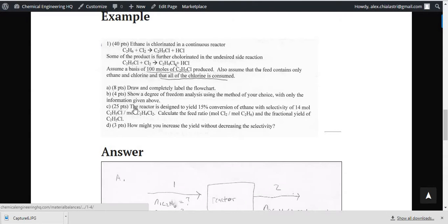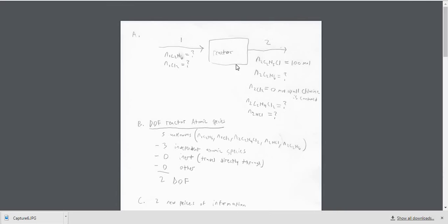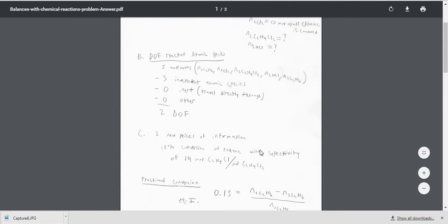But going back to the problem that we showed, in Part C we're given two more pieces of information. We're given that the yield is 15% of the conversion of ethane, and that there's a selectivity of 14 moles of C2H5Cl per mole of C2H4Cl2. And we're asked to calculate the feed ratio and the fractional yield, so we're going to have to solve for all the unknowns. Since we have two more pieces of information, our degree of freedom reduces to zero.